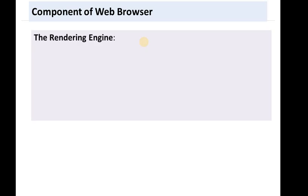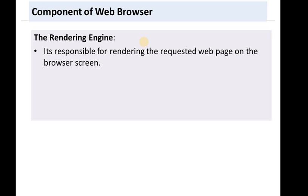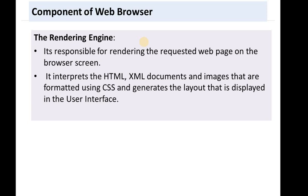What is the rendering engine? This part is responsible for rendering the requested web page on your browser screen. It interprets HTML and XML documents and images formatted using CSS, and generates the layout displayed in the user interface. For example, if you request a web document made up of text and HTML components, your rendering engine reads that HTML and XML and displays it appropriately. With the help of plugins and extensions, the rendering engine can also display other formats of data.